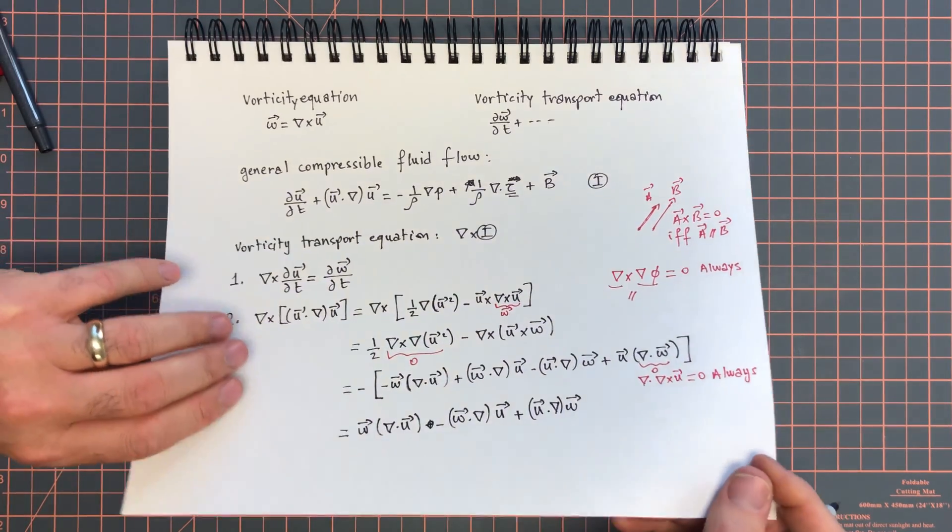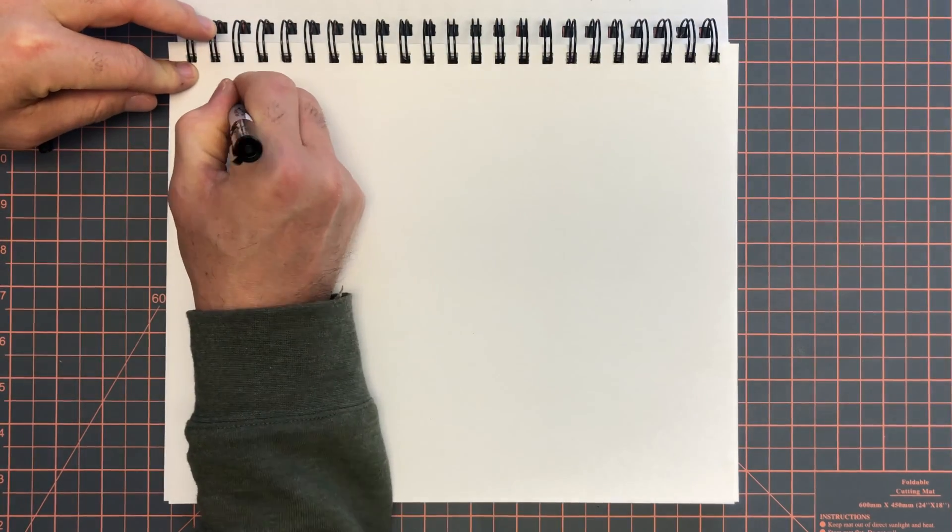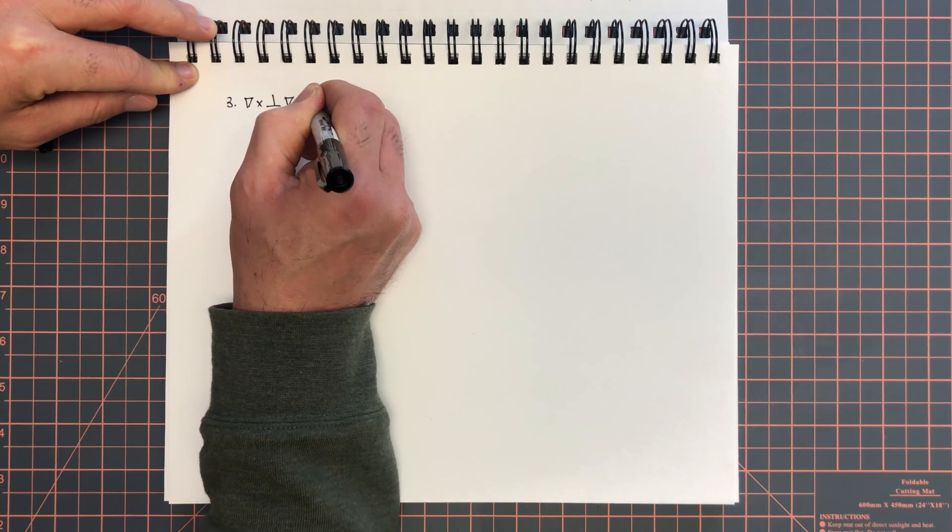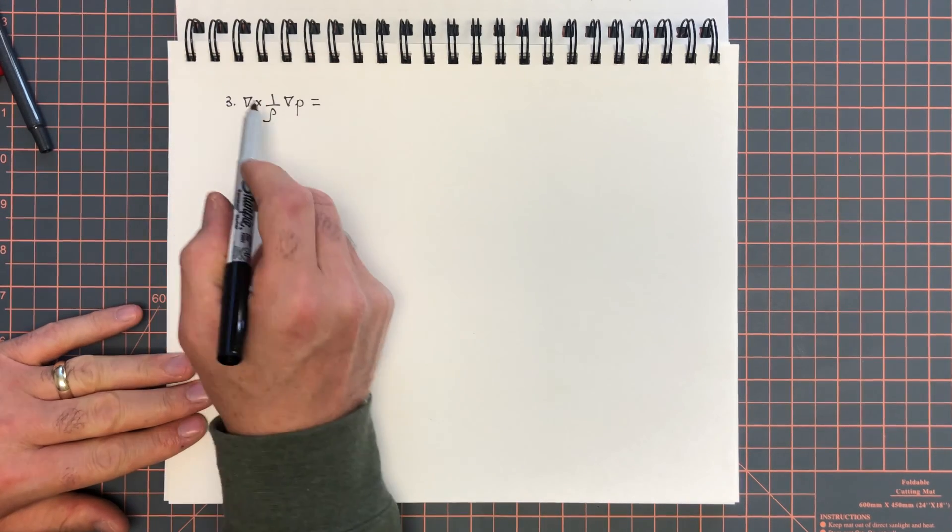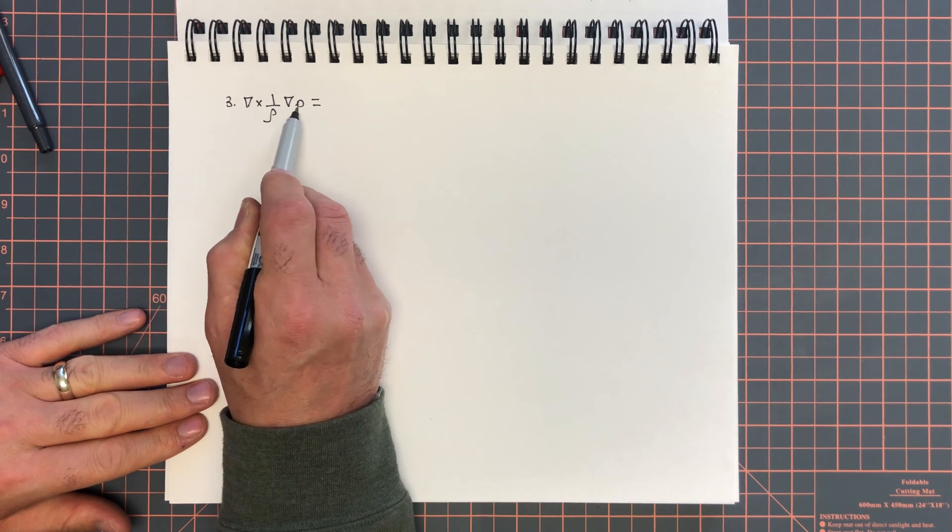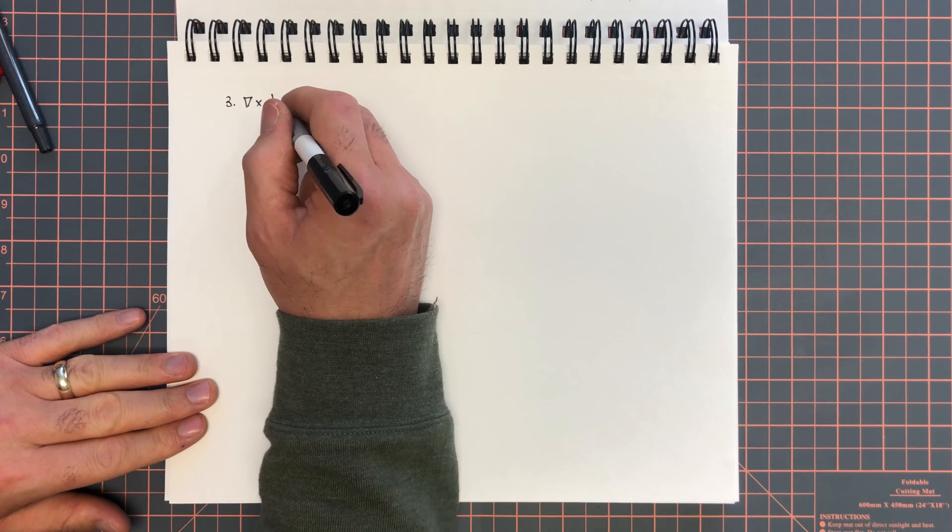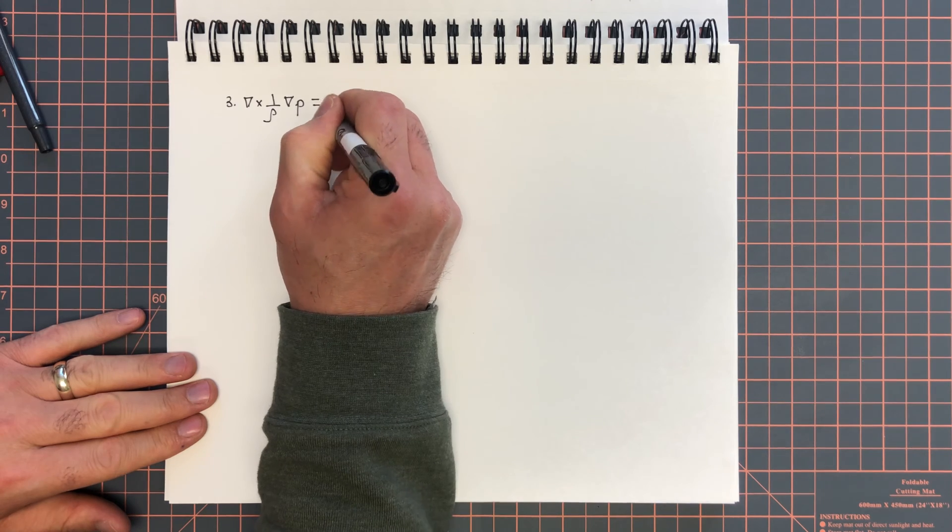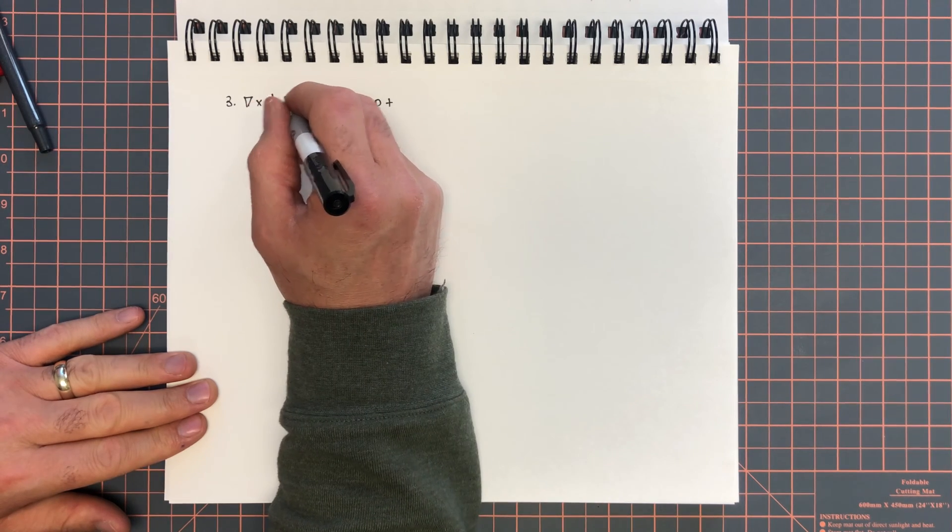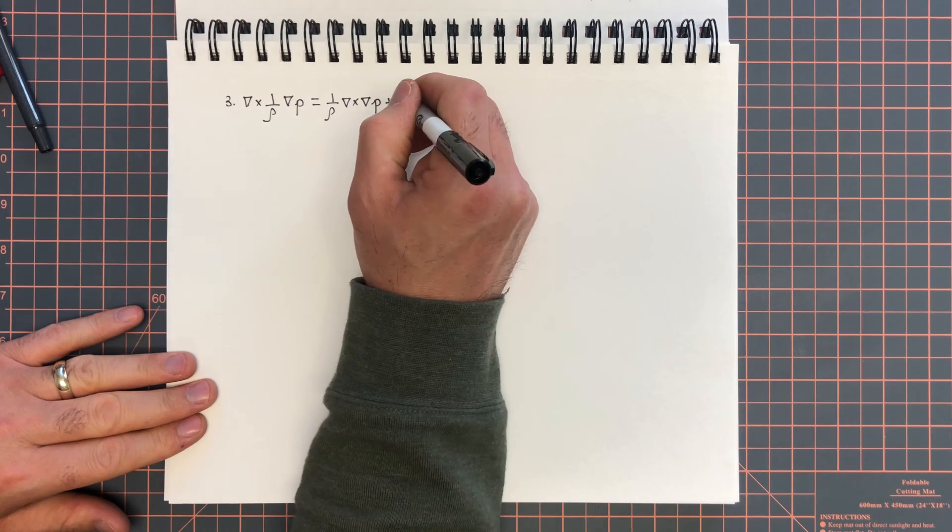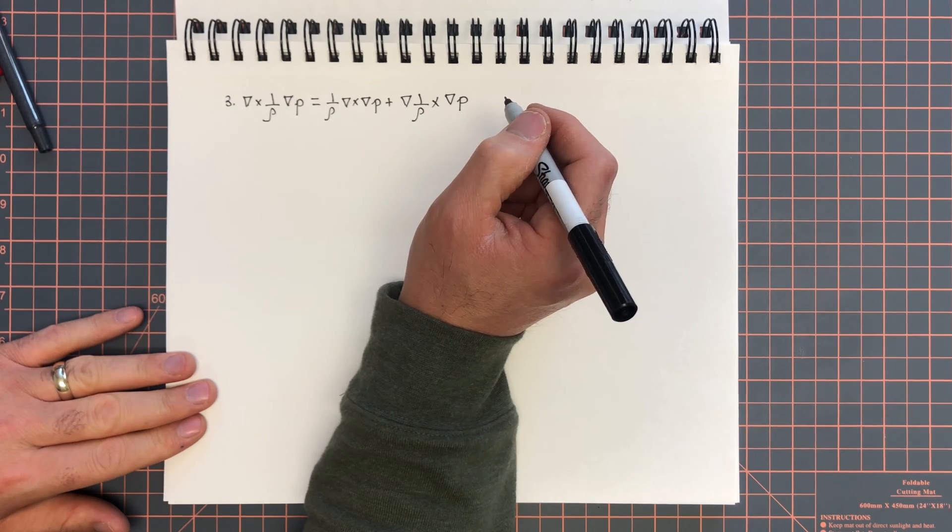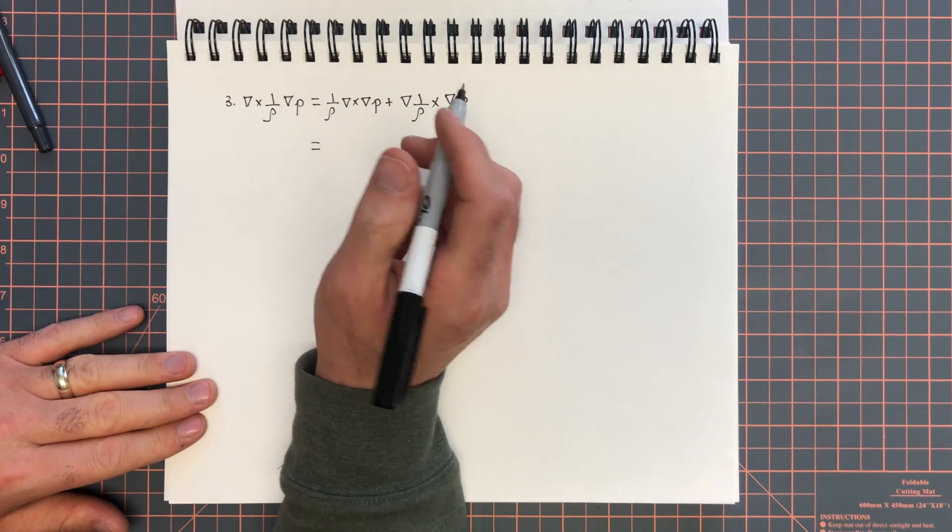Minus omega dot grad u, and plus u dot grad omega. Now, term number three, we have curl of one over rho grad p. So term number three, we have the curl of one over rho grad p, and we're going to distribute this just the same way we distribute derivatives, the derivative of a times b, a prime b plus b prime a. So that's what we're going to do here.